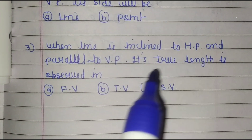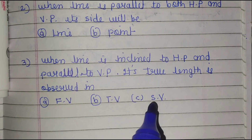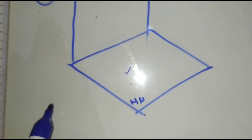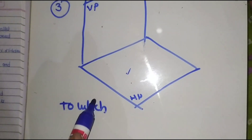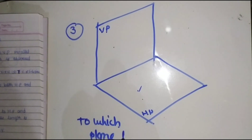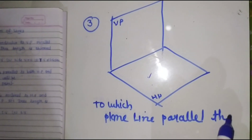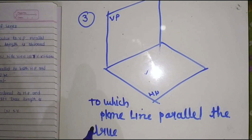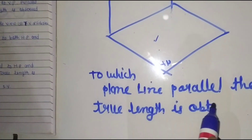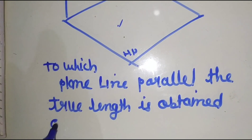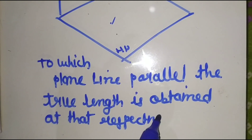When a line is inclined to HP and parallel to VP, its true length is observed in which view? The options are front view, top view, and side view. Applying the rule: to whichever plane the line is parallel, the true length of the line is obtained at that respective plane.